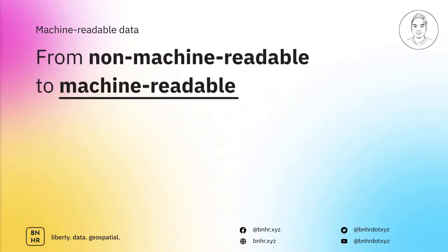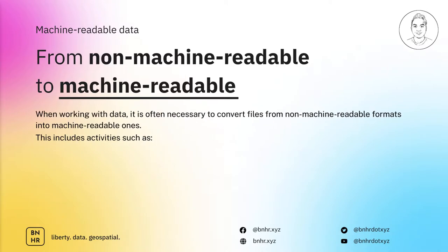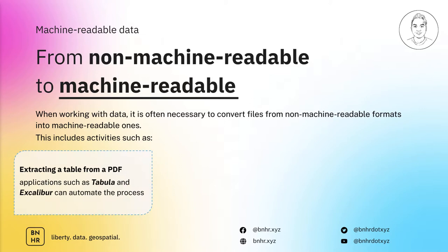With that said, in a perfect world, all the data we work with will be machine readable by default. Unfortunately, we don't live in a perfect world. Most of the time, your work with data will require you to convert files from non-machine-readable formats into machine-readable ones. This includes activities such as extracting a table from a PDF. There are, of course, applications such as Tabula and Excalibur which can help you automate the process.